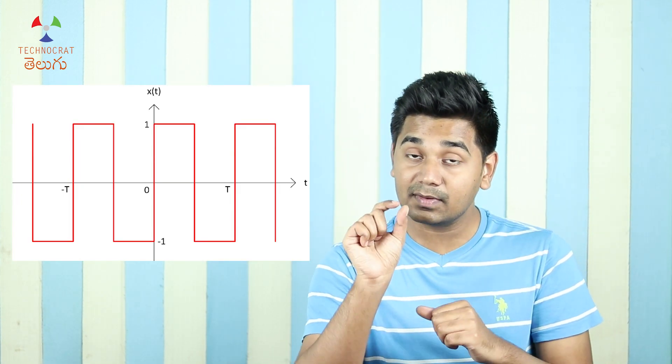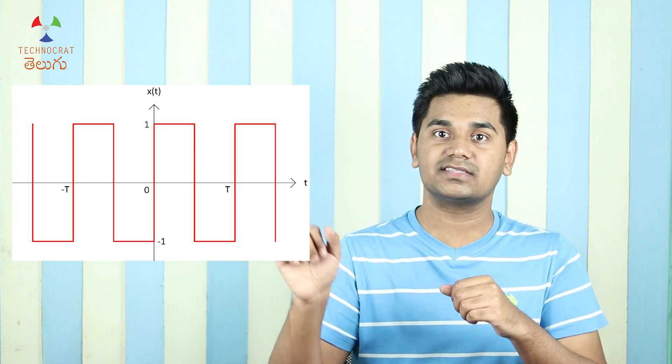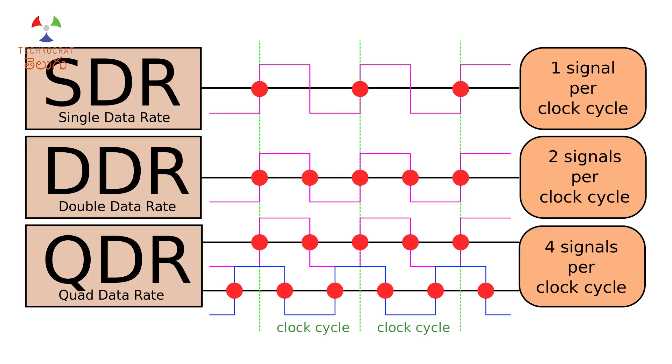In SDR RAM, one clock cycle transfers one byte of data. DDR was first announced around 2000 — DDR means double data rate, so one clock cycle transfers 2 bytes. This doubles the data throughput compared to SDR without changing the clock speed itself.